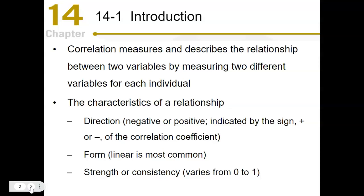We're looking at a number that describes a relationship between two different variables that come from one person. We're looking at the dynamics of this relationship — specifically the direction, the form, and the strength or consistency of that relationship. The direction is either positive or negative, indicated by a positive or negative value in the number.